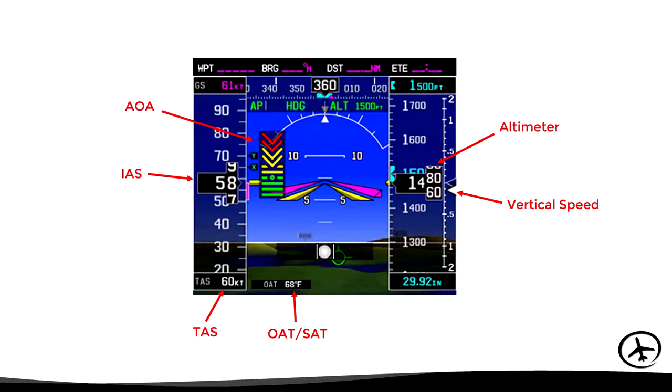Here we can see the same instruments and parameters in a digital presentation. The Mach meter is not shown here because this image corresponds to the primary flight display of a small aircraft, where the Mach number is not operationally relevant.